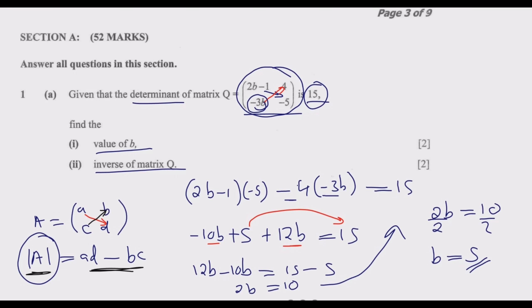Dividing both sides by 2, B is equal to 5. So 5 is the value of B. We now move to part two, where we are asked to find the inverse of matrix Q.